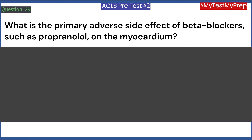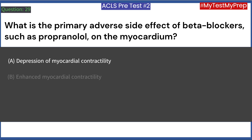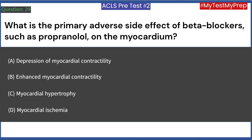What is the primary adverse side effect of beta blockers, such as propranolol, on the myocardium? A. Depression of myocardial contractility. B. Enhanced myocardial contractility. C. Myocardial hypertrophy. D. Myocardial ischemia. Answer: A. Depression of myocardial contractility.